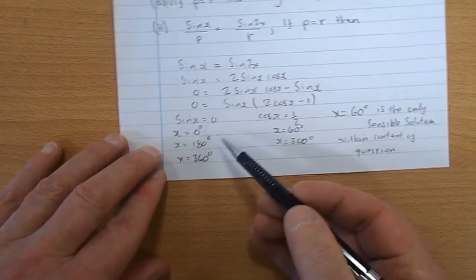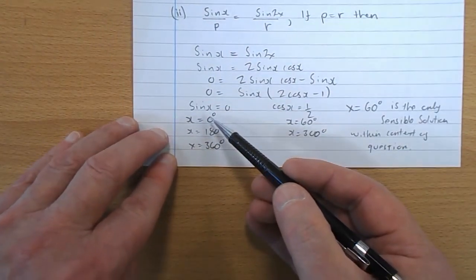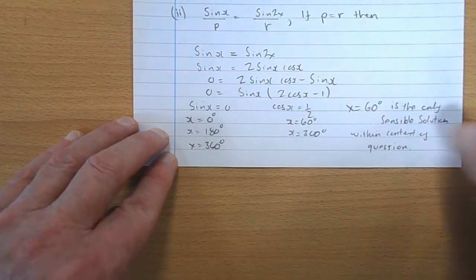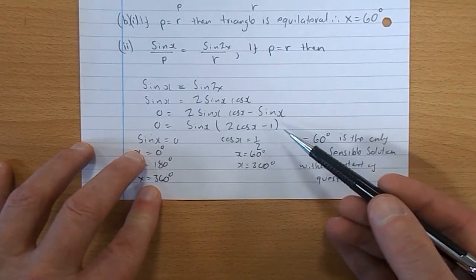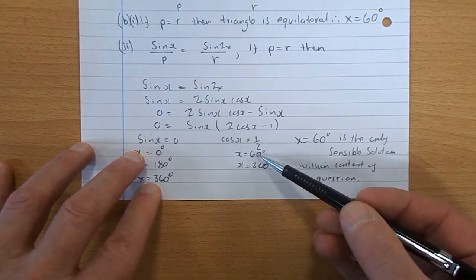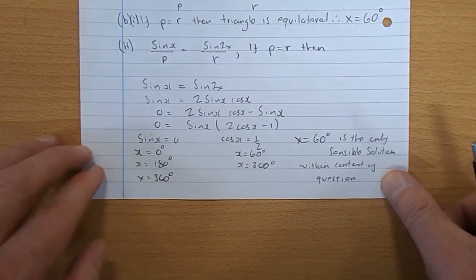So sine X could be 0. So we have, and we've done this before, 0, 180, and 360. 2 cos X take 1 is 0. Cos X would have to be a half. So X would have to be 60.